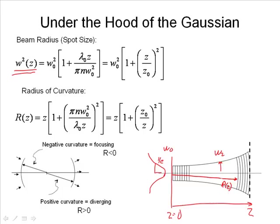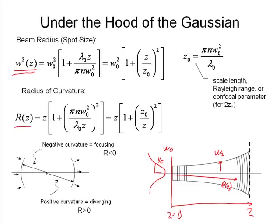Very far away from our laser, this is the type of wave we'd expect from a point source. And that certainly makes a lot of sense, because if you get far enough away from your laser, it is going to look like a point source — any emitter of radiation looks like a point source if you get far enough away. And this R of z describes this.